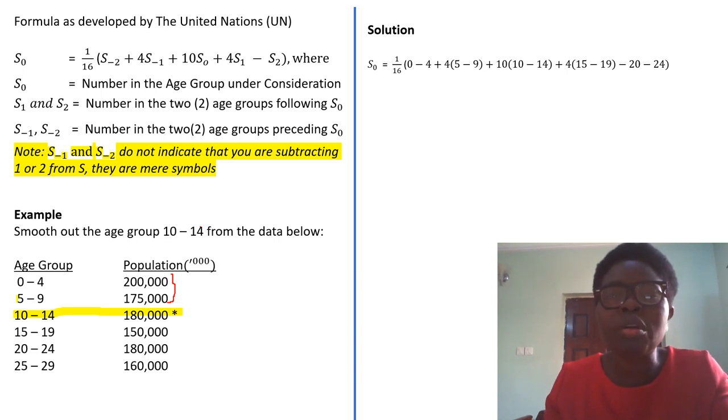Then you have five to nine. So this is what we have that we are bringing down here. Having done that, remember if we look through this, we are talking about S₀, that is the year under consideration. Now 10S₀ will give us 10 into 10 to 14 - those are the ages we are considering.